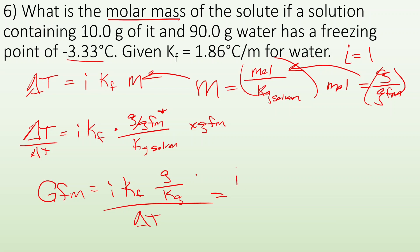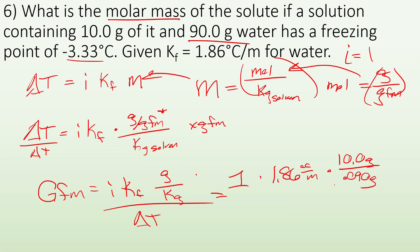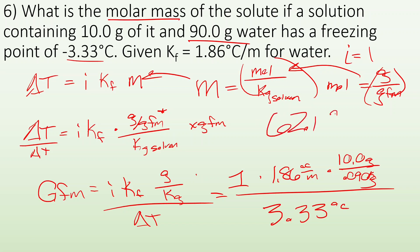Now plugging in: i = 1, Kf = 1.86°C/molal, grams = 10.0 g, kilograms of solvent = 0.090 kg (that's 90 grams of water converted to kilograms), and the freezing point depression is 3.33°C. Plugging and chugging gives a final answer of 62.1 grams per mole. So now we know the gram formula mass for that solute.